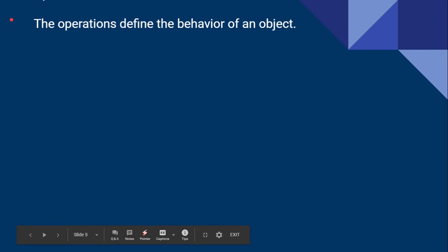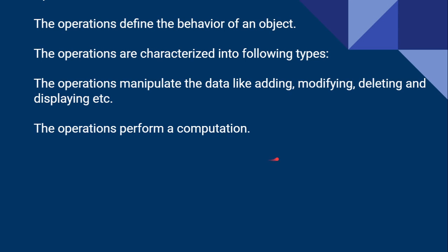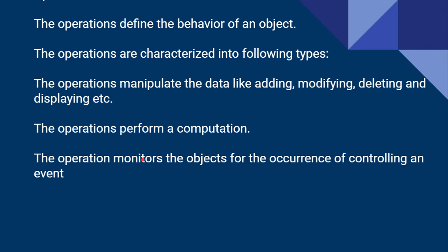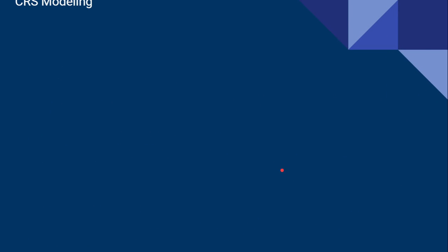This is the way to identify classes. Now let us see the operations of the class. Operations define the behavior of an object. For example, operations on data include adding, modifying, deleting, or displaying. You can add the data, display the data, compile the data, or modify the data. The operation performs a computation — it does some process. The operation also monitors objects for the occurrence of a controlling event. When any action occurs on the object, an event occurs, and based on the operation, we can say the event has occurred.